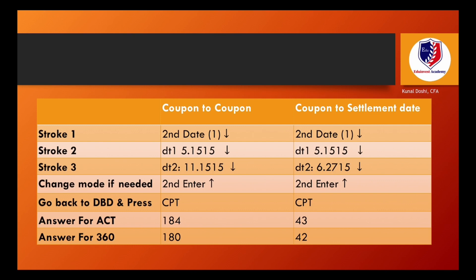Quick revision: For the days between the two coupon dates, enter Date 1 as May 15, 2015 and Date 2 as November 15, 2015. For actual over actual, press Compute and get 184 days. To switch to 30 over 360, press Second Enter, then Compute to get 180 days. For the coupon-to-settlement calculation using June 27, 2015 as Date 2: actual over actual gives 43 days; change the mode with Second Enter and get 42 days for 30 over 360.